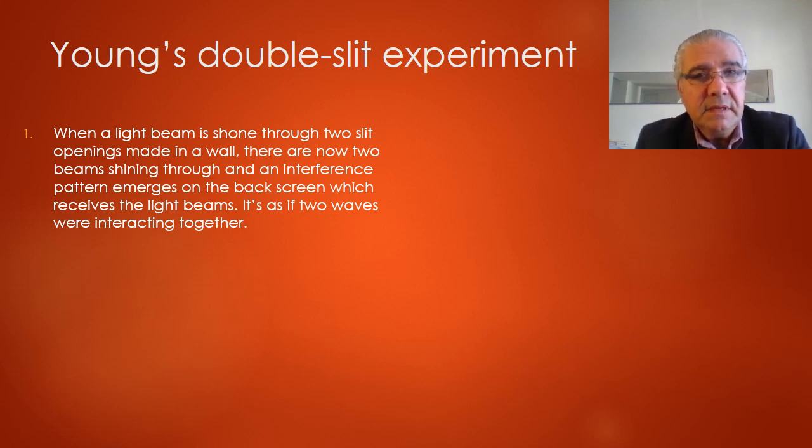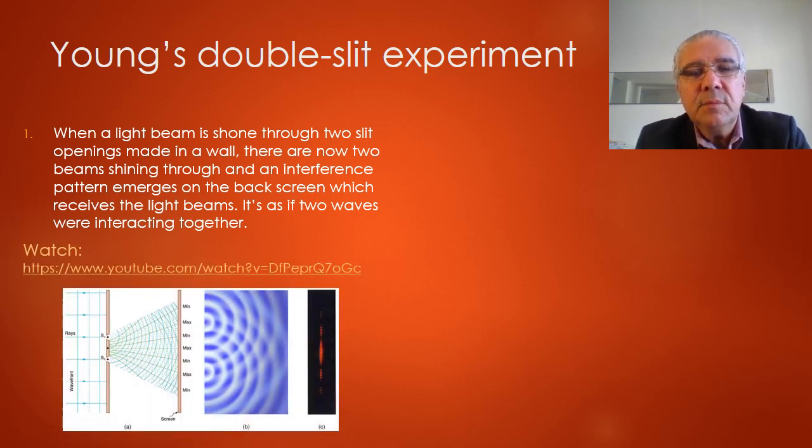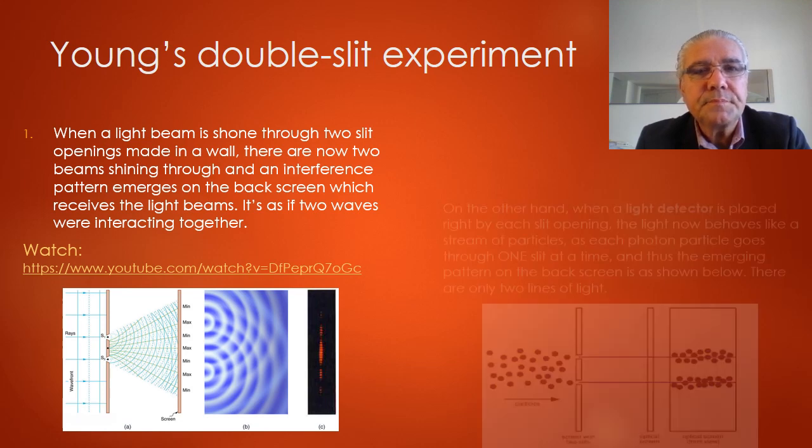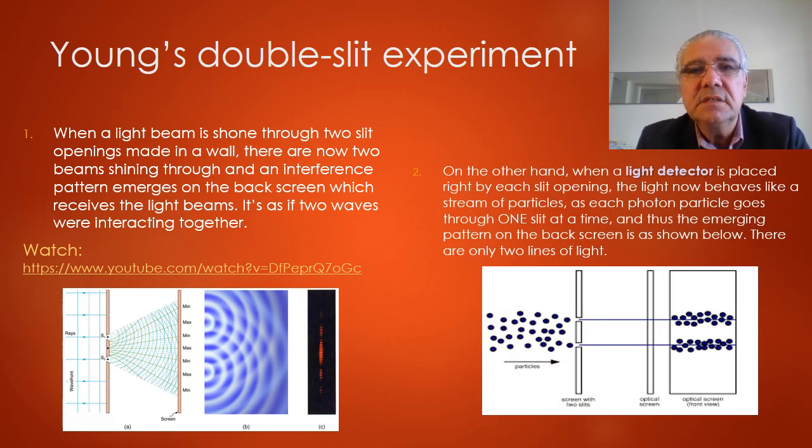Take a light beam and shine it through two slits in a wall. On the other side of that wall, you will see two beams of light emerging. And when this beam of lights hit a wall in the back of the room, they will kind of have a pattern which is similar to a pattern of two waves, water waves interacting with one another. On the other hand, if you put a detector at the entrance of each of those slits, then the detector will detect photons passing through one slit at a time. And the pattern that will emerge in the back wall now will be a pattern of two lines of light.